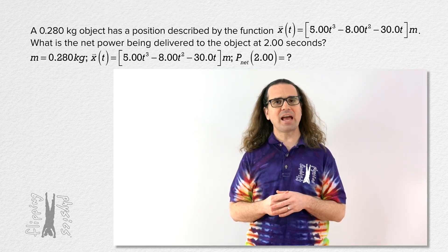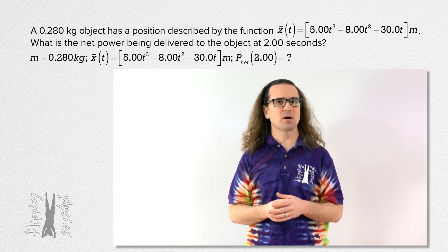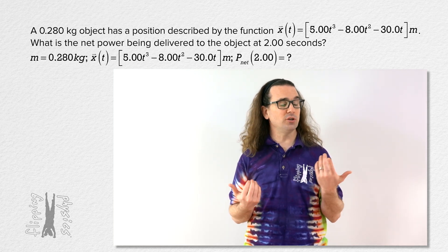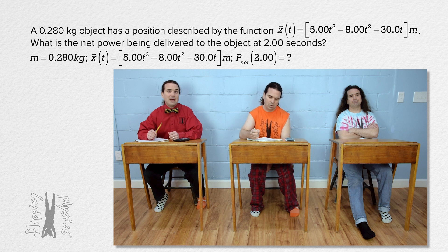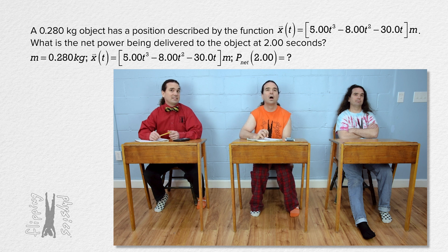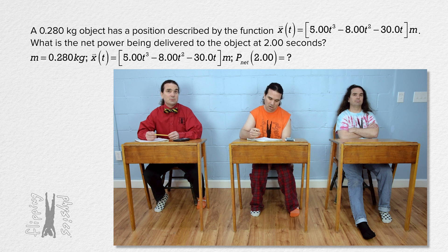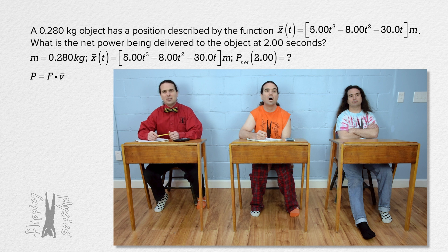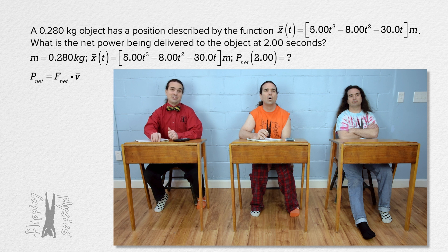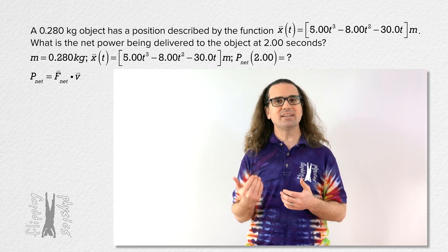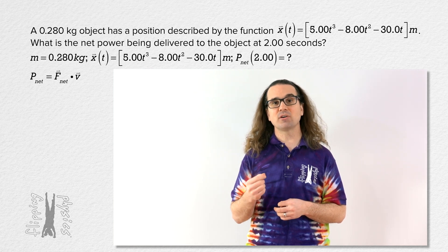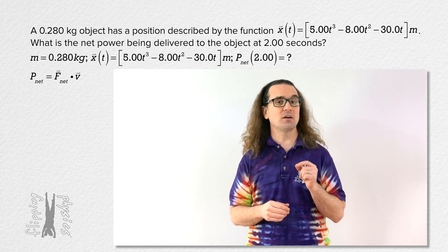Billy, is this problem asking for average or instantaneous power and what equation should we use? It's asking for the power at a specific time rather than over a time period, so this is asking for instantaneous power. The equation we should use is power equals the dot product of force and velocity — and since the question asks for net power, it is actually the dot product of net force and velocity. Therefore, we need equations for net force and velocity as functions of time in terms of unit vectors.